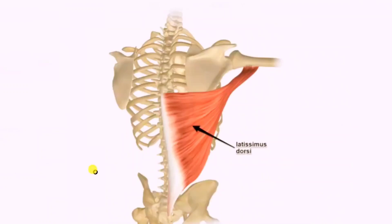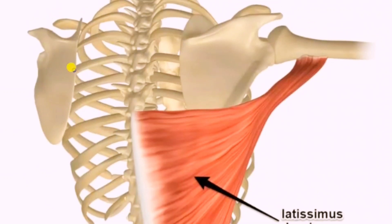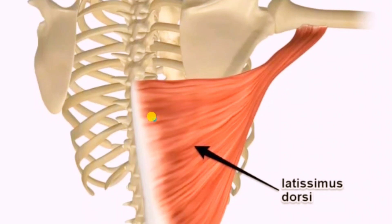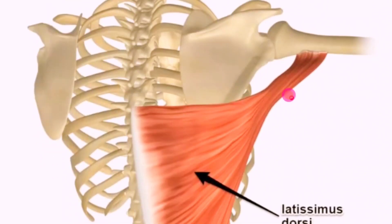The next muscle is latissimus dorsi. Latissimus dorsi originates from the spinous processes of T7 to T12 and the inferior third to fourth ribs, inserting at the intertubercular groove of the humerus.